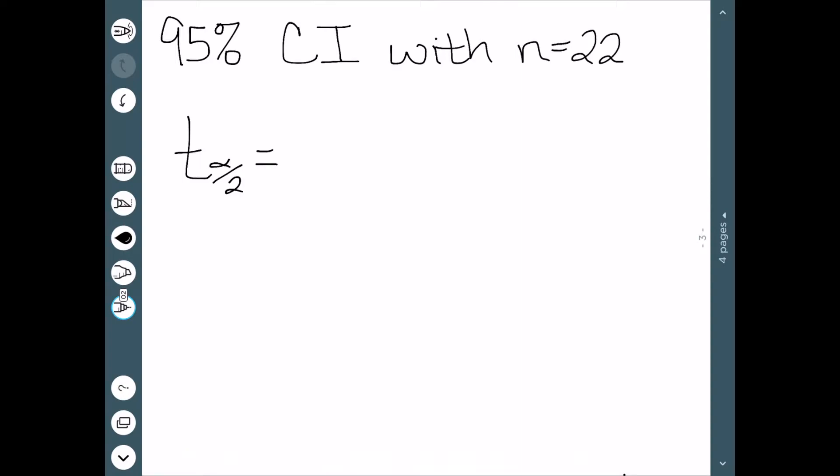So let's look at how to find this value, t. Let's suppose we want a 95% confidence interval and we know our sample size is 22. When we find this value, t, it's going to depend on those two pieces of data. What is the confidence interval and what is the sample size? In reality, for this, we're going to need what's called degrees of freedom, which is the sample size minus 1. In this case, our degrees of freedom is 21.